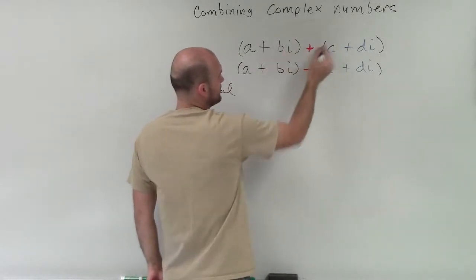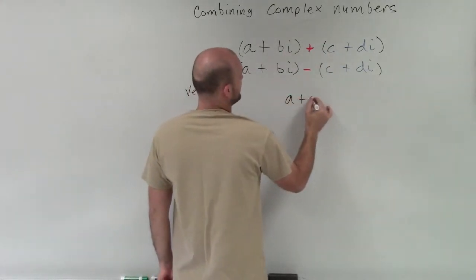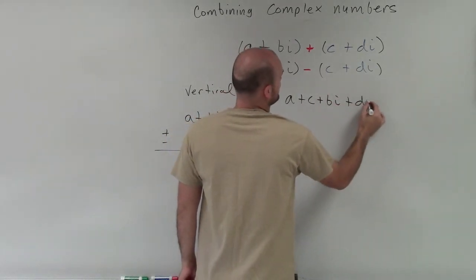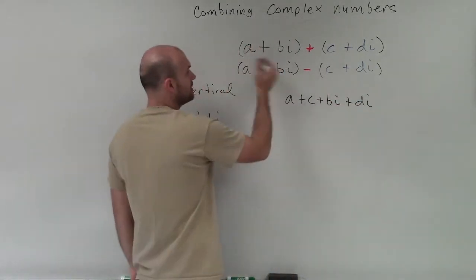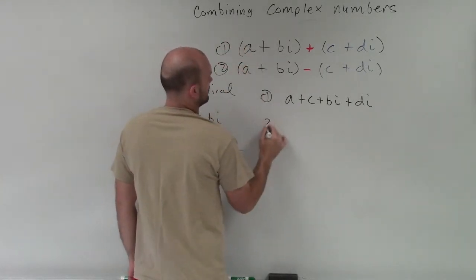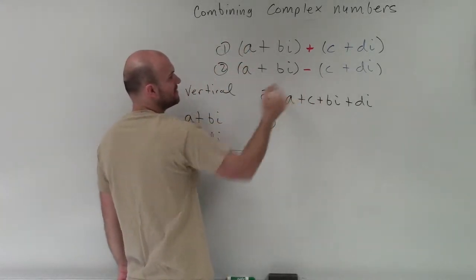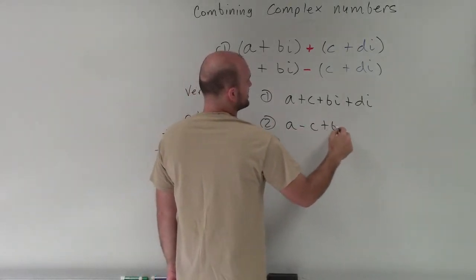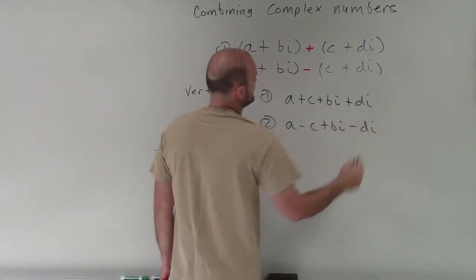So you make sure that if it's up here, you could either do a plus c and then plus bi plus di. Or if you're going to go to here, then we combine a minus c plus bi minus di.